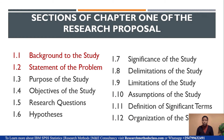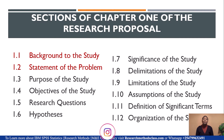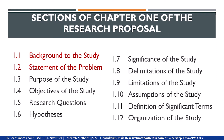Let us first look at the sections of chapter 1 of the research proposal. Chapter 1 has 12 subsections. Section 1.1 is background to the study — note it is background to the study, not background of the study. Then we have: the statement of the problem, purpose of the study, objectives of the study, research questions, hypothesis, significance of the study, delimitations of the study (some will call it scope), limitations of the study, assumptions of the study, definition of significant terms, and organization of the study.